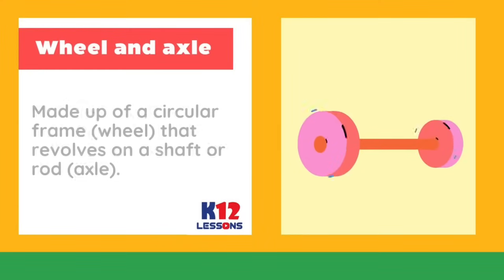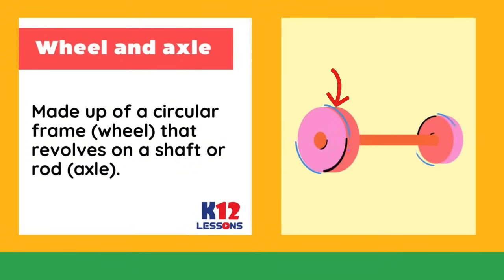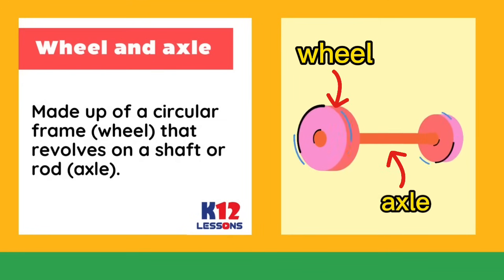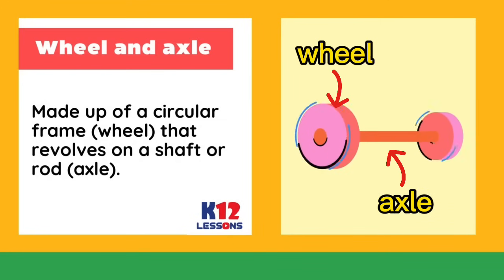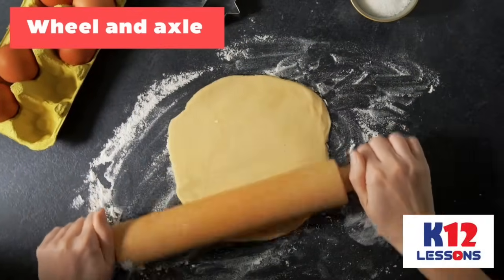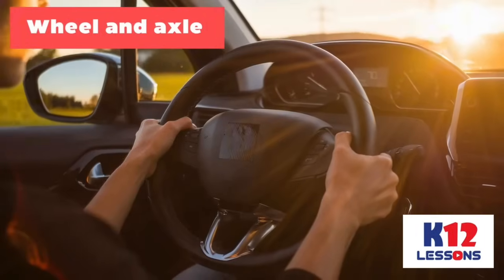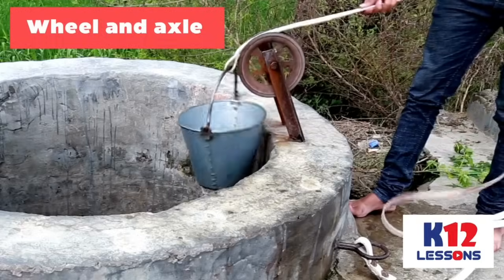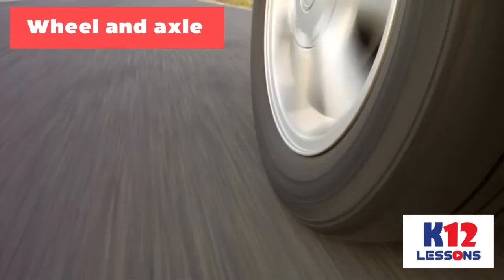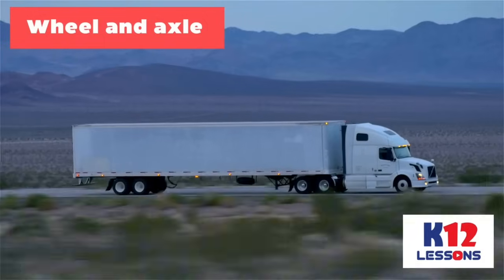Wheel and axle: made up of a circular frame, or wheel, that revolves on a shaft or rod called an axle. Examples: rolling pin, doorknob, and steering wheel. Uses: raising weights and carrying or transporting loads over land, and for travel over long distances.